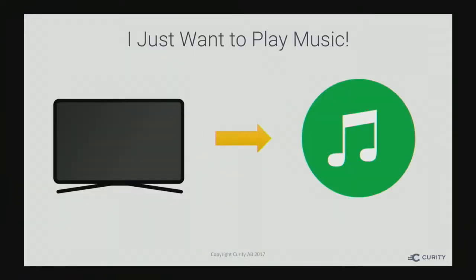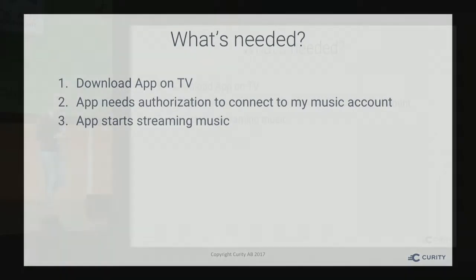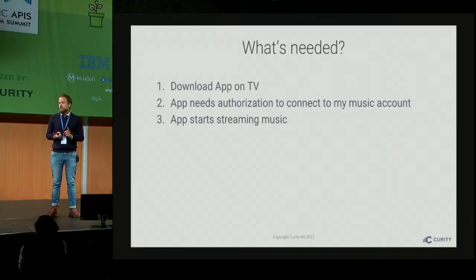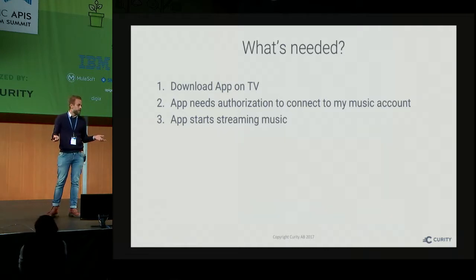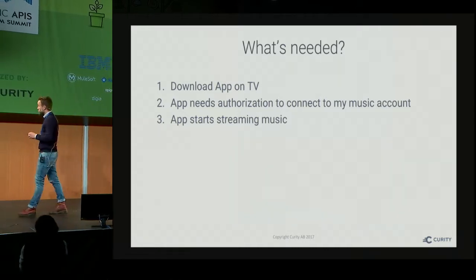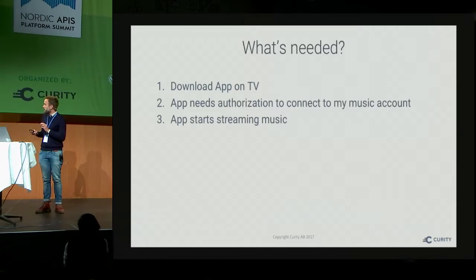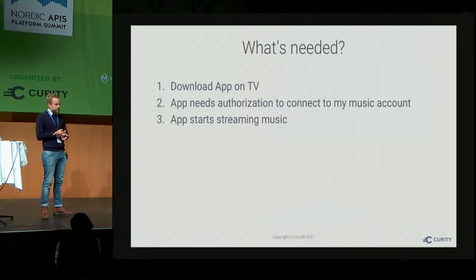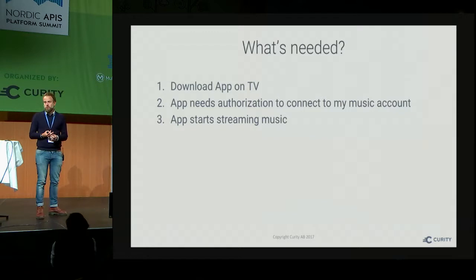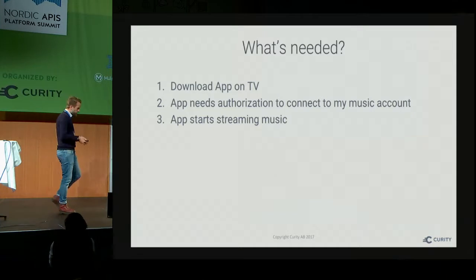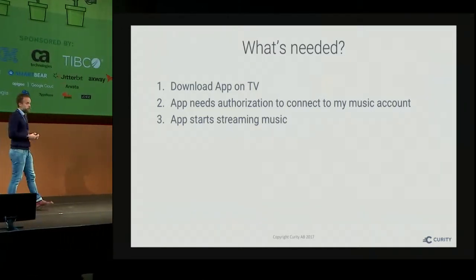So this is the problem we want to talk about today. I want my TV to play music from some unnamed streaming service. We need to do a couple of things. We need to download an app, if the TV supports apps — mine does, it's horrible, but it does. We need to get this app to connect to my streaming service somehow and start streaming music. And obviously, since I work with identity and OAuth, I want to use OAuth to do this.